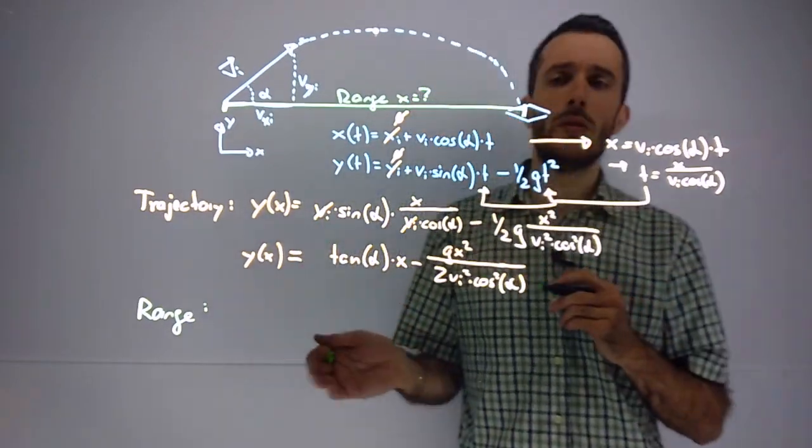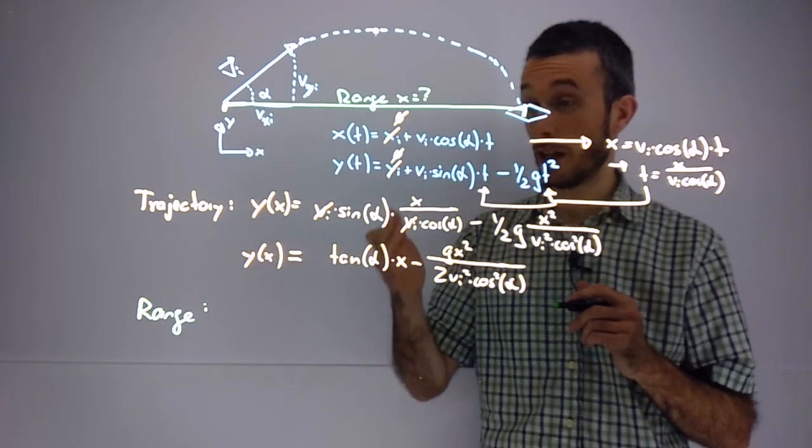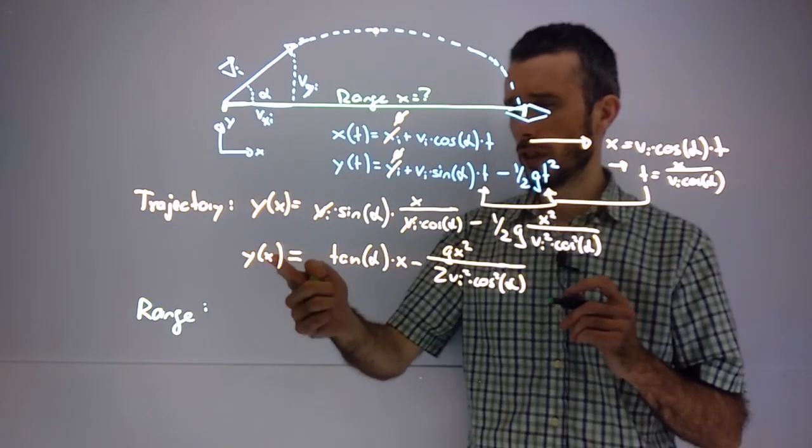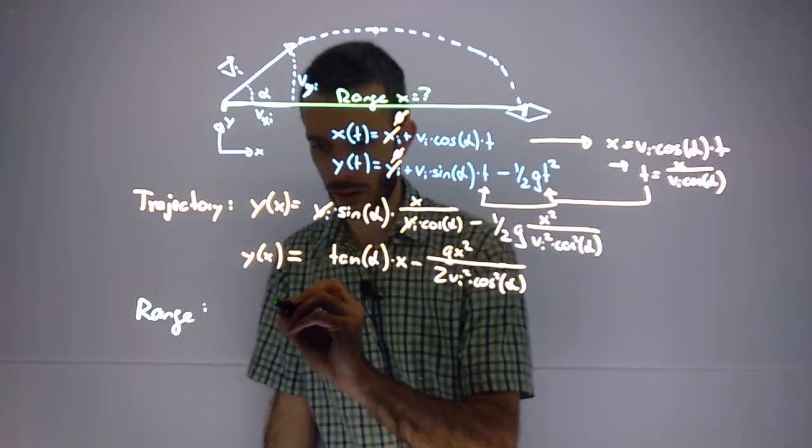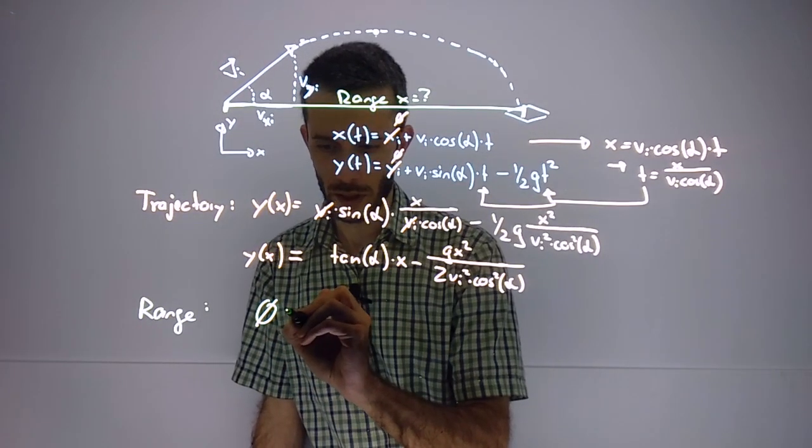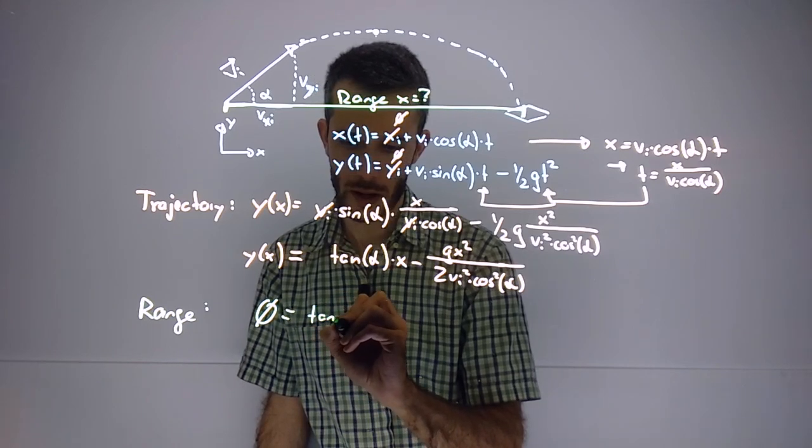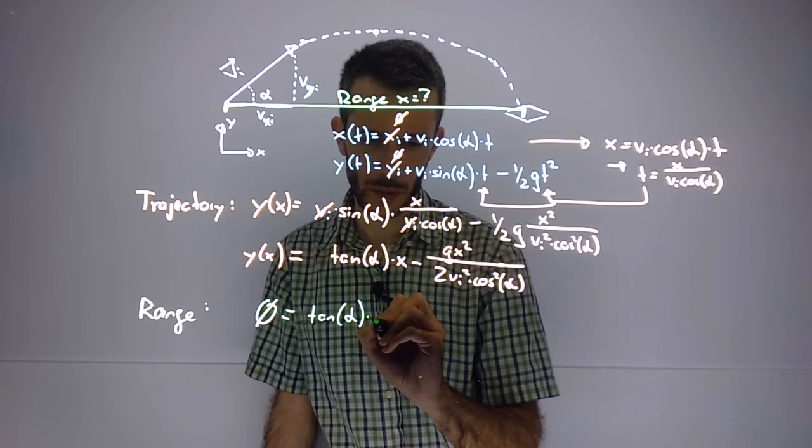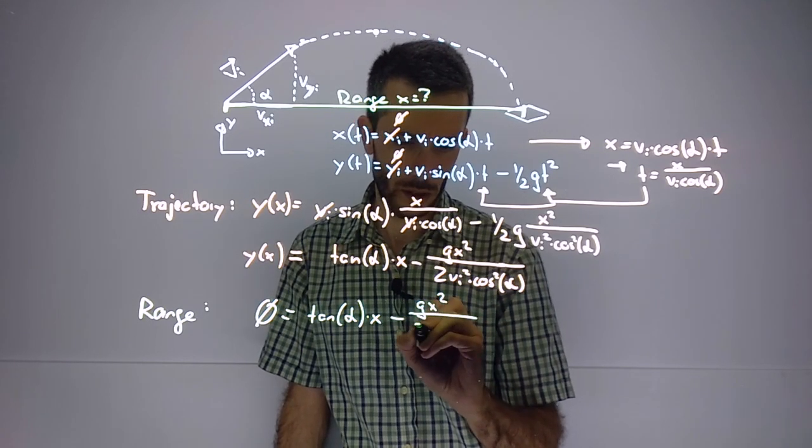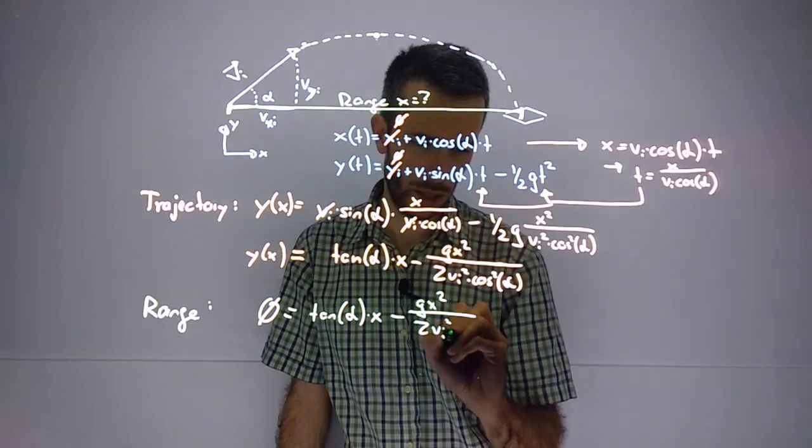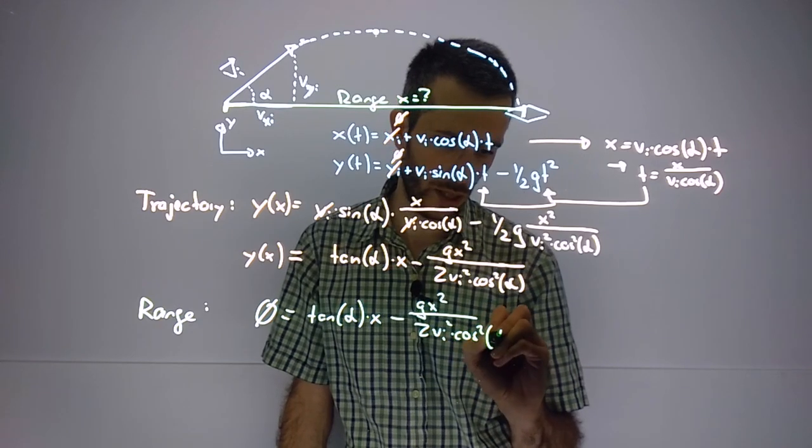In order to do the range equation, I can use the trajectory equation I just got. All I have to do is plug in the y final as 0. So 0 equals tan(α) times my x minus gx² over 2v_initial² times cos²(α).